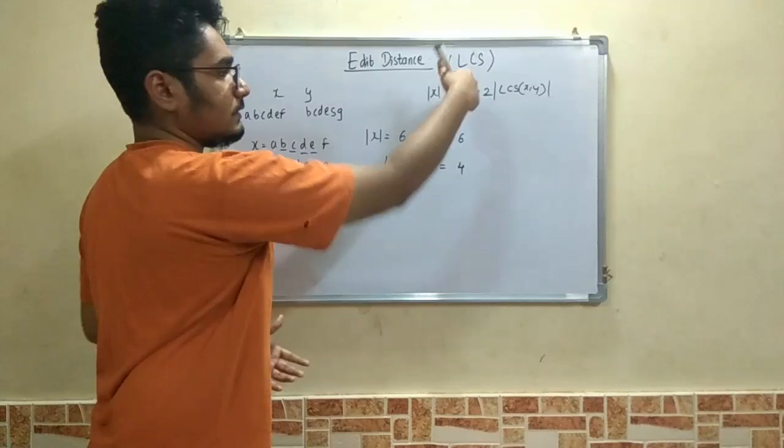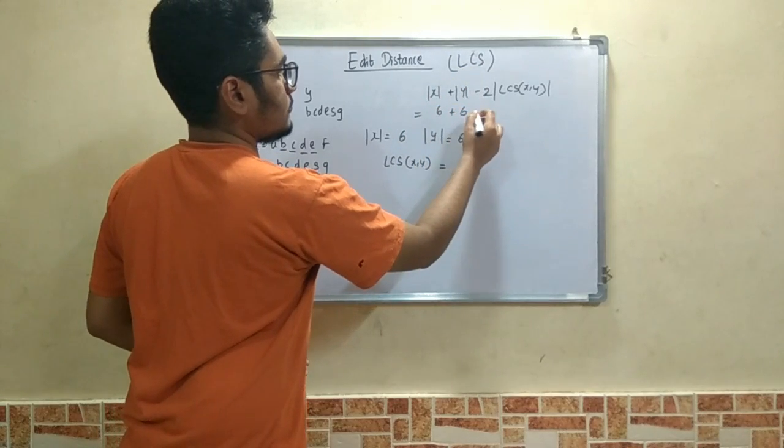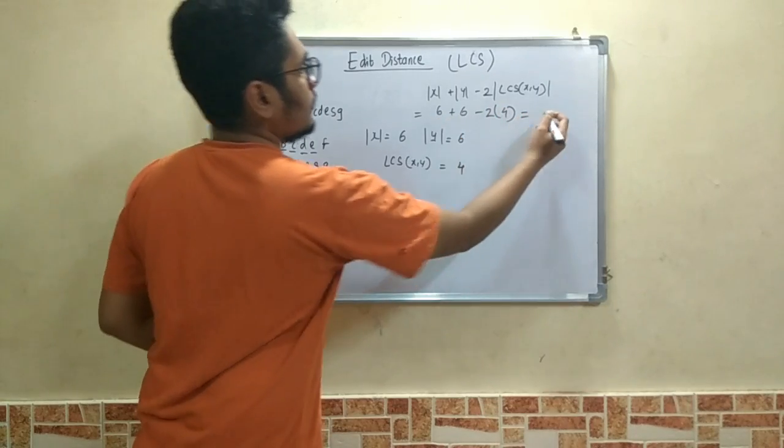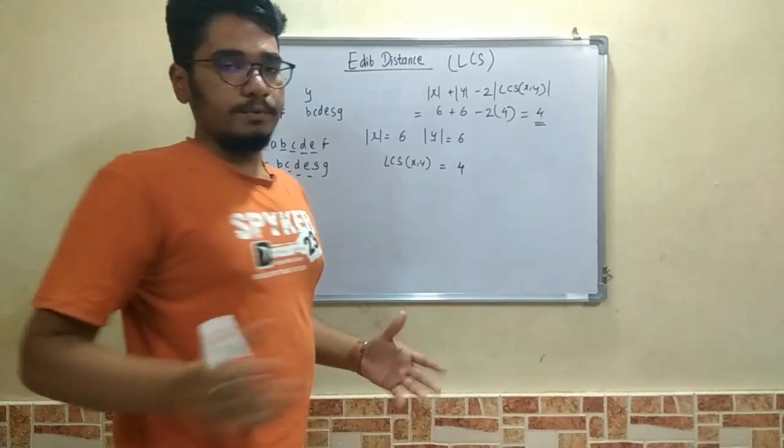We will put these values in the formula. We get 6 plus 6 minus 2 times 4, which equals 12 minus 8, which comes out to be 4.